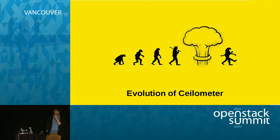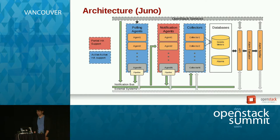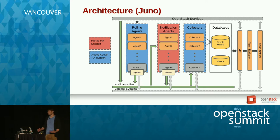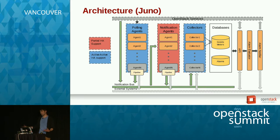So that's kind of where we started. I'm going to highlight some of the changes we made in the past few cycles. Ceilometer itself is composed of several discrete services: polling functions, notification handling, storage, and alarming. It's possible to run all of them as a complete solution, or you can run each individually. They're also designed to scale horizontally — if you have a large load, you can just add more agents to cope with that.